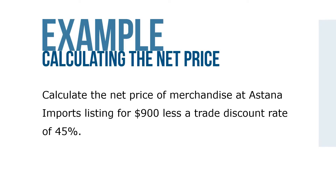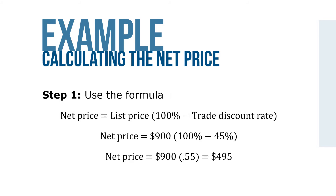Let's take a look at an example. Calculate the net price of merchandise at Astana Imports listing for $900 less a trade discount rate of 45%. Using the formula net price equals list price times (100% minus trade discount rate), the list price is $900, and 100% minus 45% equals 55%. Multiplying $900 by 55% gives us a net price of $495.